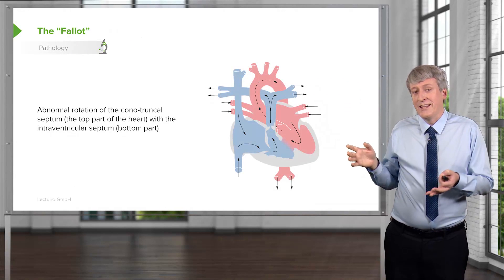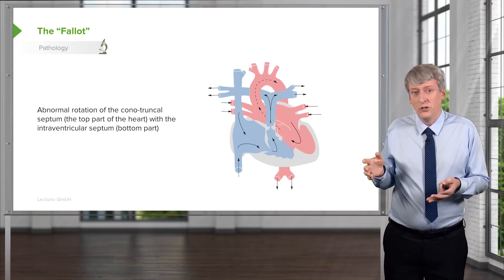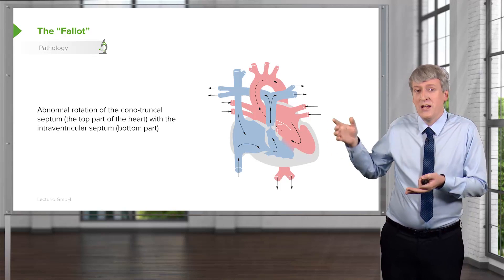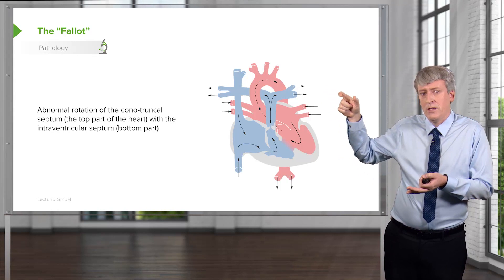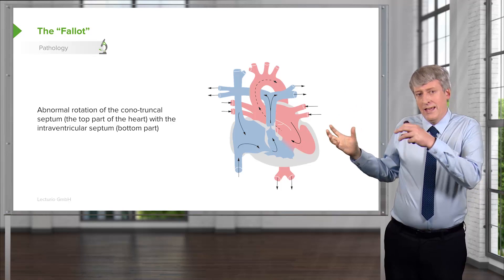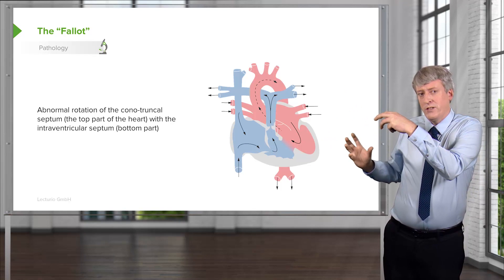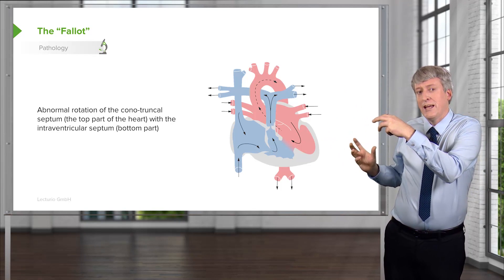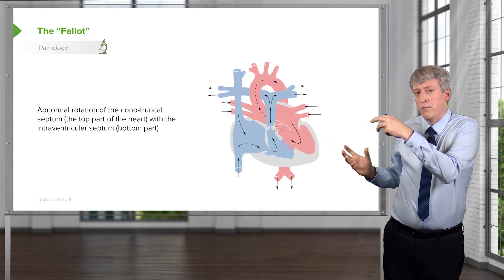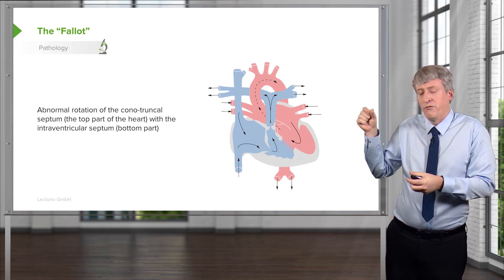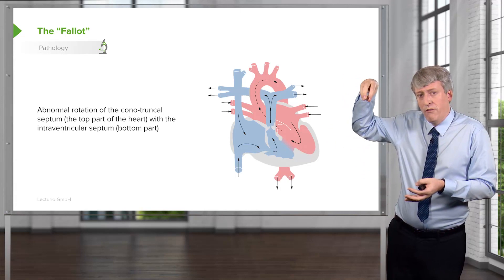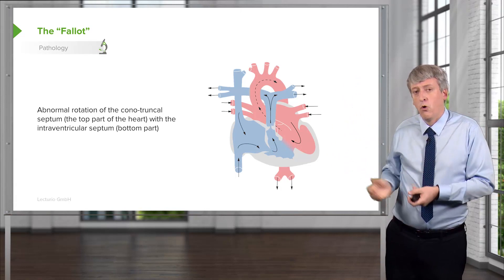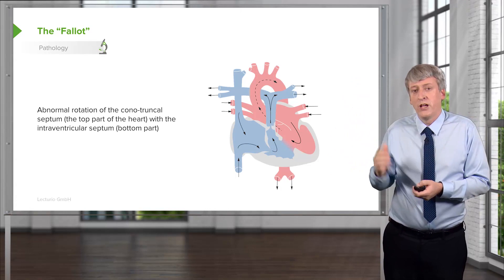Realistically, this is all just one thing. The abnormal rotation of the conotruncal septum — the top part of the heart — is abnormally rotated relative to the intraventricular septum, the bottom part of the heart. This whole shifting results in all of these findings. It's really just a shifting of the upper part against the lower part of the heart that produces the full tetralogy.